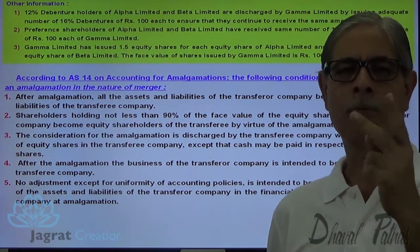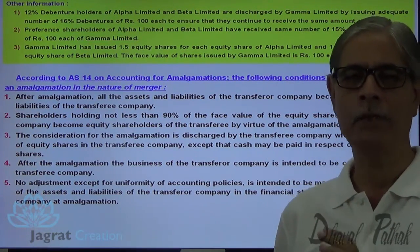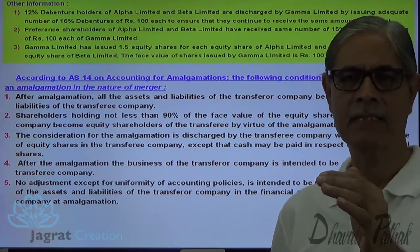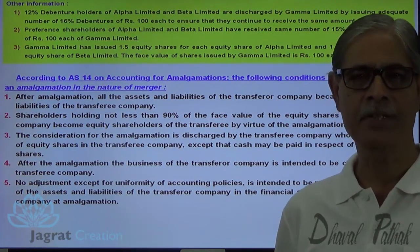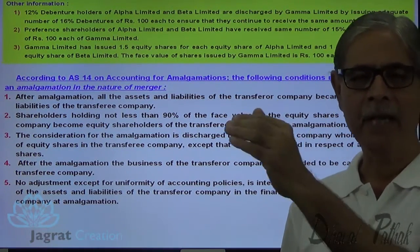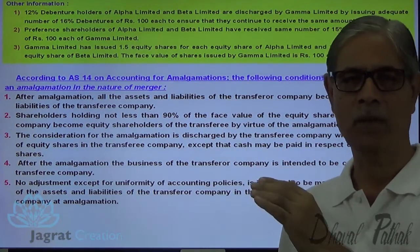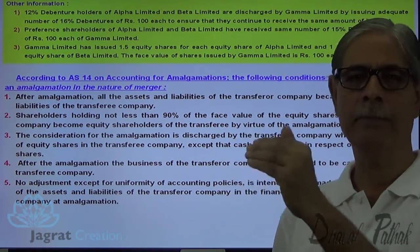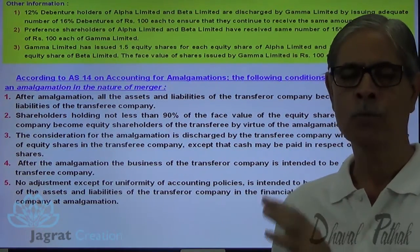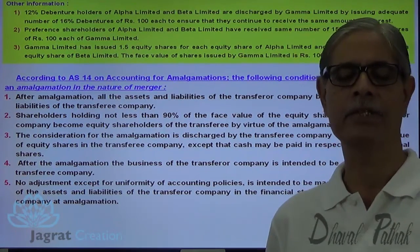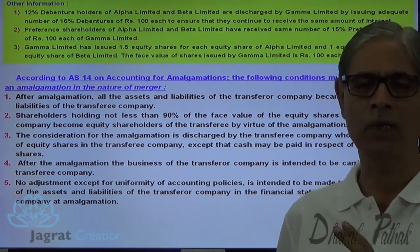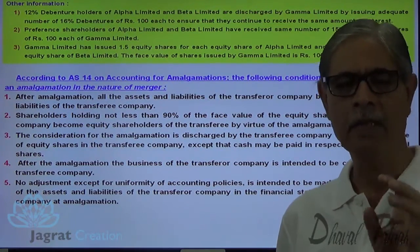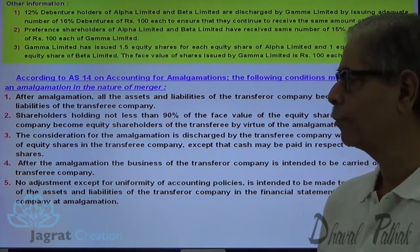After amalgamation, the business of the transferor company is intended to be carried on by the transferee company. No adjustment except for uniformity in accounting policies is intended to be made in the books. Assets and liabilities should not be revalued at the time of acquisition. Only for uniformity of accounting policy, changes in value are permitted — for example, if depreciation is provided by straight line method for one company and diminishing balance method for another, conversion for uniformity is allowed; otherwise no other revaluation is permitted.